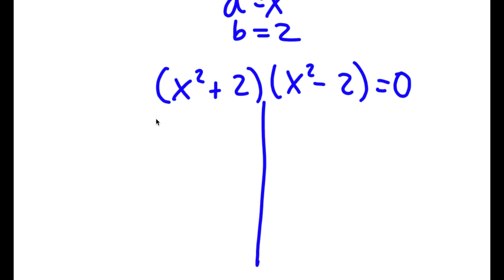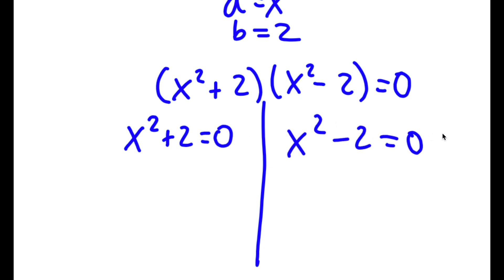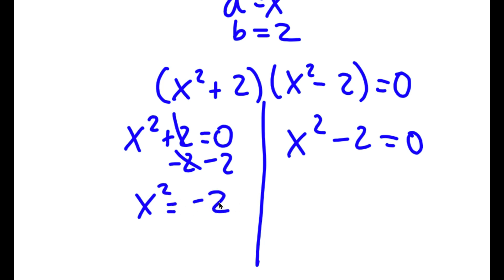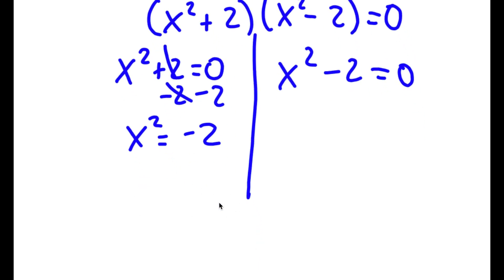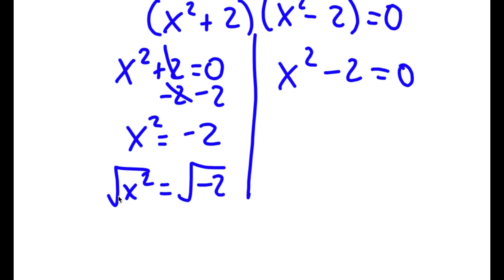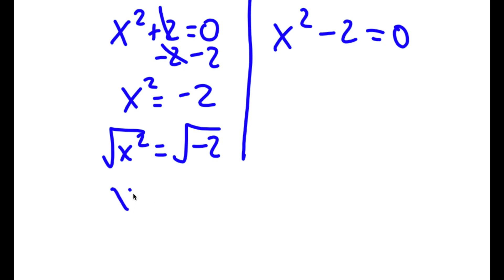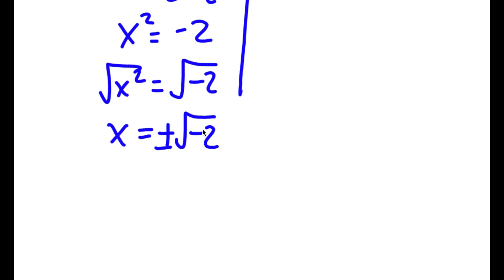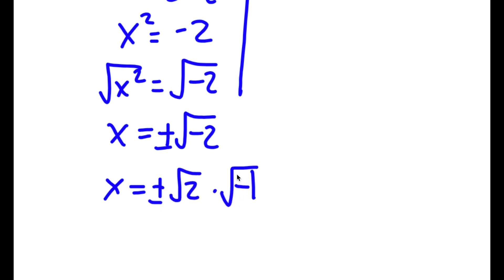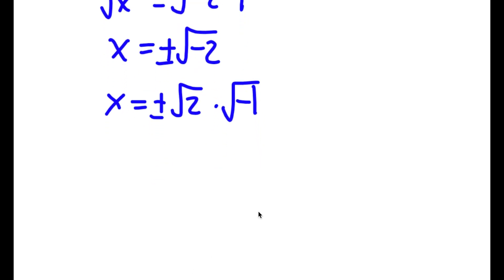This gives me two equations. I get x squared plus 2 is equal to 0, and x squared minus 2 is equal to 0. For x squared plus 2 equals 0, I subtract 2 on both sides to get x squared is equal to negative 2. Taking the square root on both sides, x equals positive or negative square root of negative 2. The square root of negative 2 can be rewritten as the square root of 2 times the square root of negative 1, and the square root of negative 1 equals the imaginary number i. So x equals positive or negative square root of 2 times i.